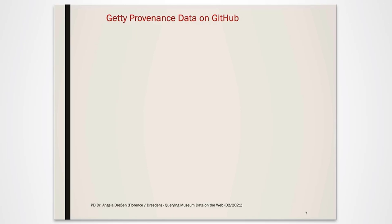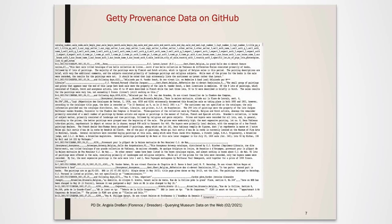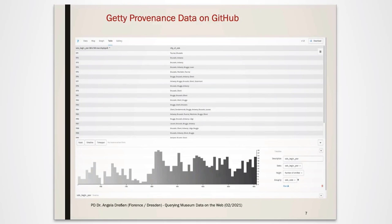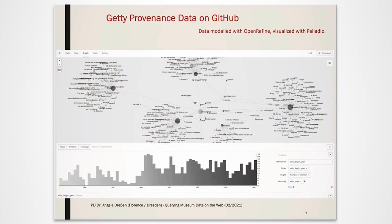Let us look at the provenance data of the Getty Museum in Los Angeles. This slide shows some of the data available for download from the Getty. The data format available for download is a CSV file, which you can read, but in order to get meaningful information out of this data, you would need to process it further. Therefore, I have modeled this data with a tool called OpenRefine and processed it for visualization with Palladio. Both OpenRefine and Palladio are free tools, which we will come back to later on. The result shown here is a network graph with cities and related auction houses, and a timeline for acquisitions in the Getty in relation to the year.